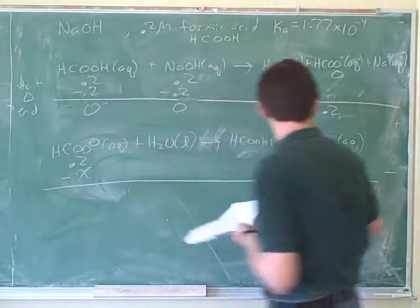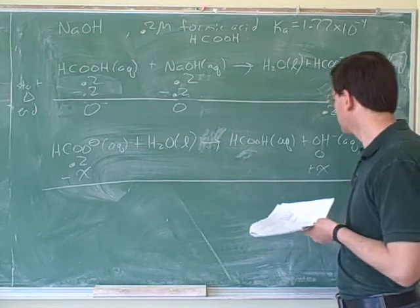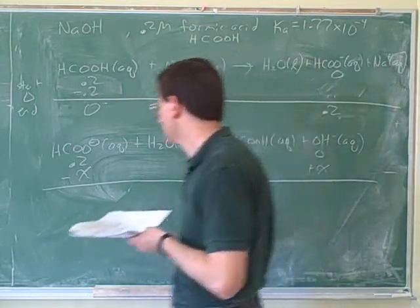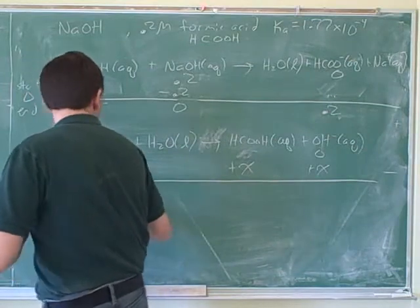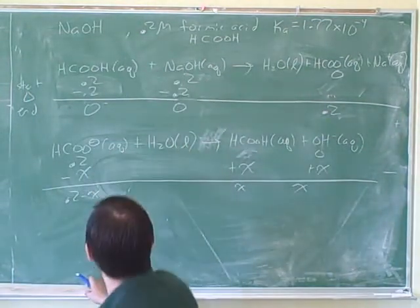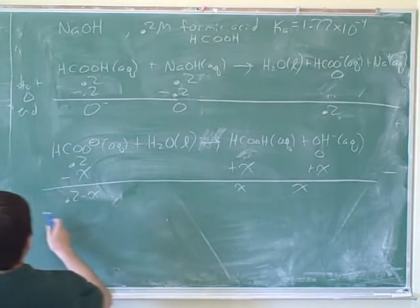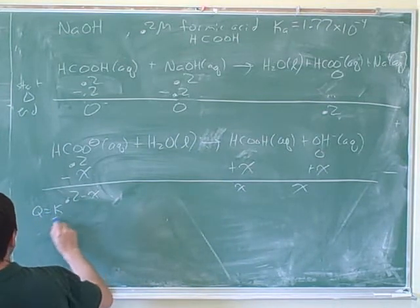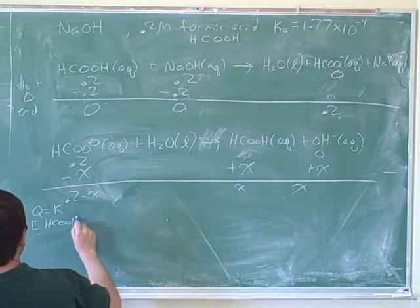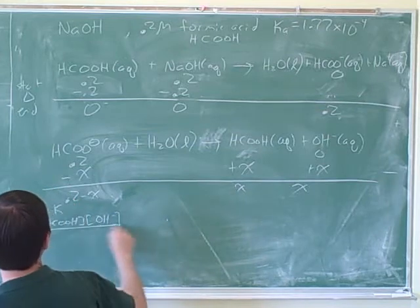And our final amount — what would this change be? X and plus X. So it would be X² over 0.2 is equal to the Ka, which is 1.77 times 10 to the negative 4. So X² over 0.2 equals Ka. Solve for X.